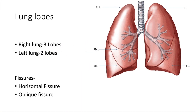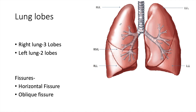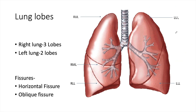Now coming to basic anatomy. We have two lungs. The right lung has three lobes: the right upper lobe, the right middle lobe, and the right lower lobe. Hence the right lung has two fissures — the horizontal fissure, which separates the right upper lobe from the right middle lobe, and the oblique fissure, which separates the right lower lobe from the rest of the lung. The left lung has only two lobes — the left upper lobe and the left lower lobe — separated by the oblique fissure.